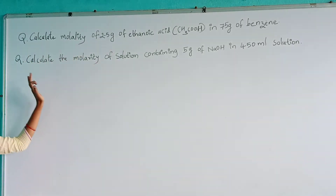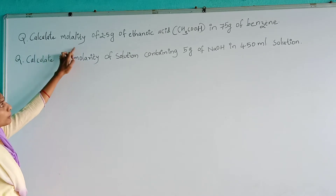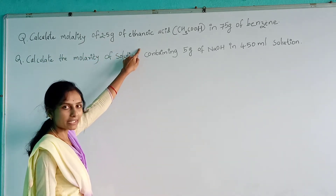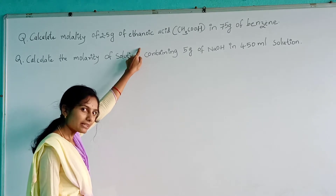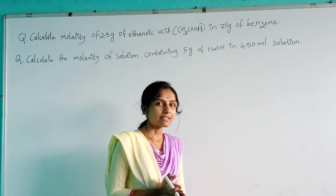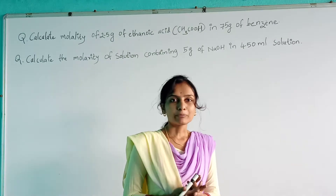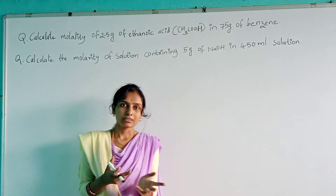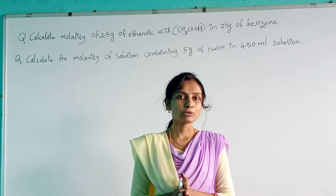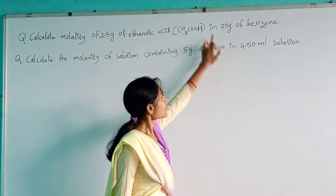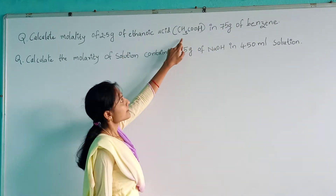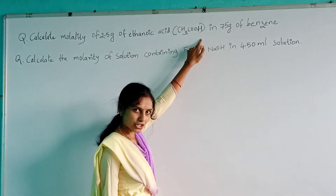First question: calculate the molality of 2.5 g of ethanoic acid. Don't get confused — ethanoic acid is the IUPAC name of acetic acid. Most people use acetic acid; that is more common. The formula of ethanoic acid is CH₃COOH.